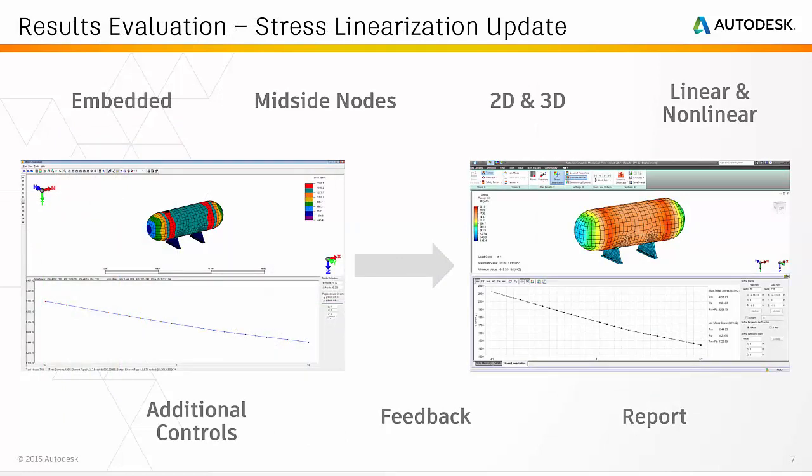The stress linearization utility has been redesigned and is now located within the output bar. Enhancements include: support for all brick and tet elements with or without mid-side nodes; support for 2D plate and shell elements; support for all linear and nonlinear analysis types that produce stress results; full support for model and display unit systems; control of stress class classification line divisions; ability to define the first, last, and reference points by coordinates or graphical selection; updated warnings and error messages; export to CSV and HTML report containing additional information related to the setup and results of stress linearization; and incremental results that update when running a nonlinear analysis.